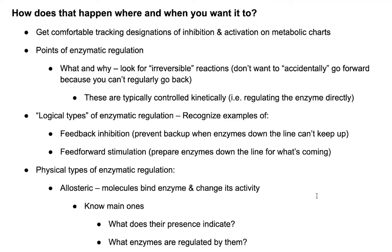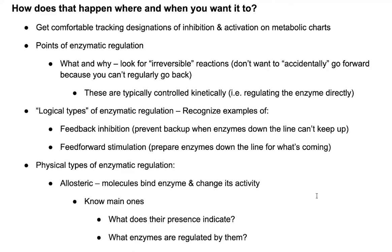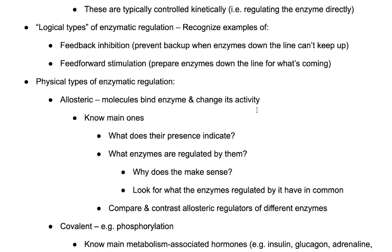If you had some artificial conditions where you added huge amounts of your products, you could theoretically get things to go back, but that's not going to happen in your body. These types of reactions — if they go forward — it's basically impossible to go backwards, and therefore you only want to go forward if you really want to. So you want to tightly regulate those steps. You can regulate them by regulating the enzyme itself, rather than trying to control things by altering concentrations of products and reactants, which would require skewing Q and K-eq impossibly far.